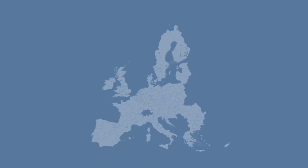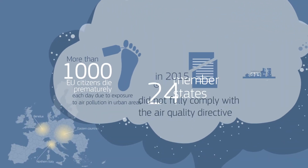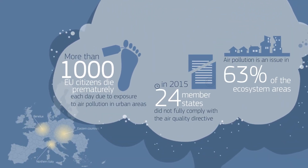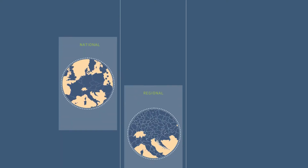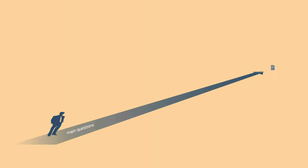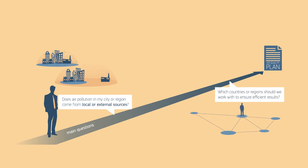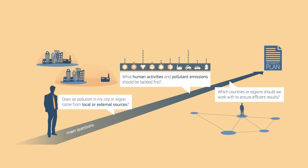Air quality in Europe is improving as a result of EU legislation, but significant problems remain. Policymakers at national, regional and local level have to design and implement air quality plans to improve the situation wherever necessary. To do so, they need quick answers to specific questions: Does air pollution in my city or region come from local or external sources? Which countries or regions should we work with to ensure efficient results? What human activities and pollutant emissions should be tackled first?